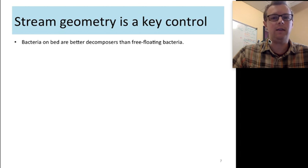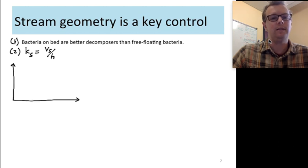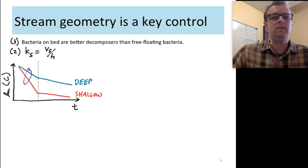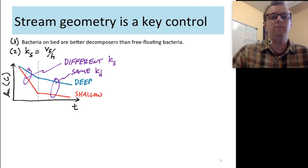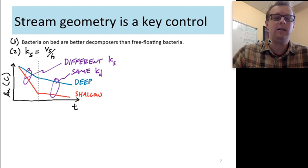So the final point that I'd like to make in this lecture is that stream geometry becomes incredibly important in these problems. And this is for two reasons. The first reason is that bacteria on the stream bed are better decomposers than free-floating bacteria. So the more bed contact area you have, or the larger contact length with the stream bed relative to the flow, you're going to get more efficient decomposition. The second point is that settling velocity, as you already know, scales removal rates with depth. So as depth goes up, we're going to see changes in the effective settling rate. And I've tried to illustrate that with the blue and red lines here.